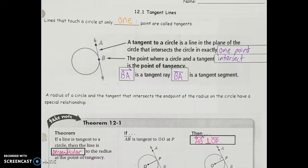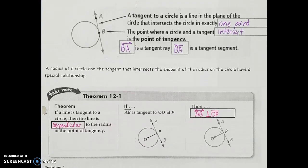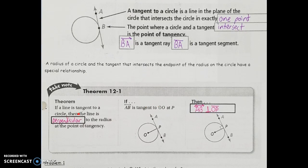When we look at a tangent line and a radius of a circle, the radius drawn to the point where the tangent touches will have a special relationship. The theorem states: if a line is tangent to a circle, then the line is perpendicular to the radius at the point of tangency. So if line AB is tangent to the circle at point P, then radius OP is perpendicular to tangent line AB.